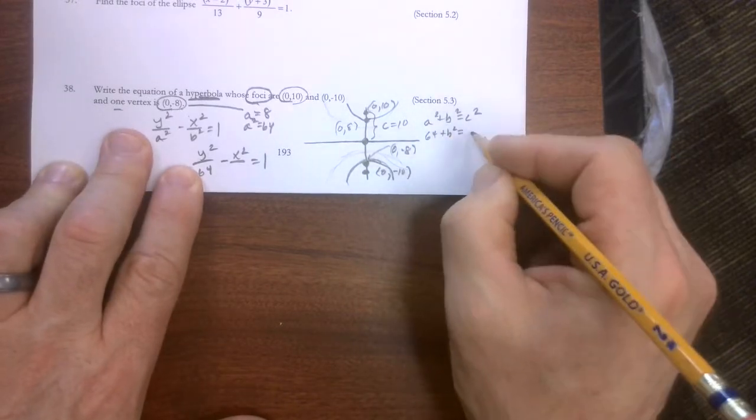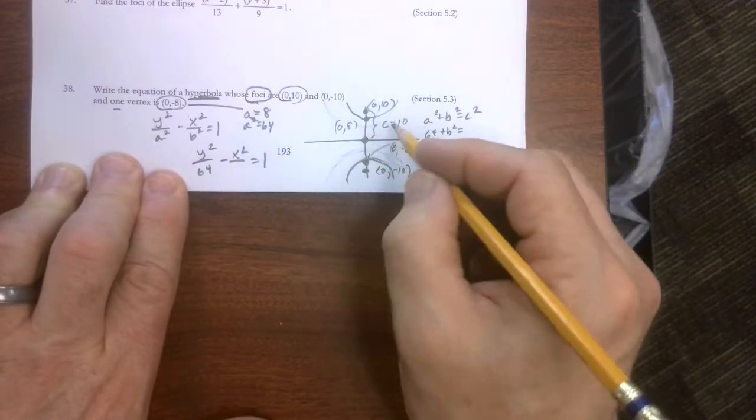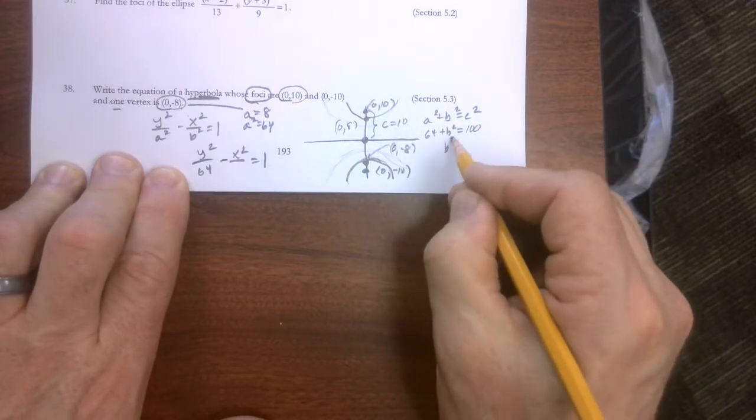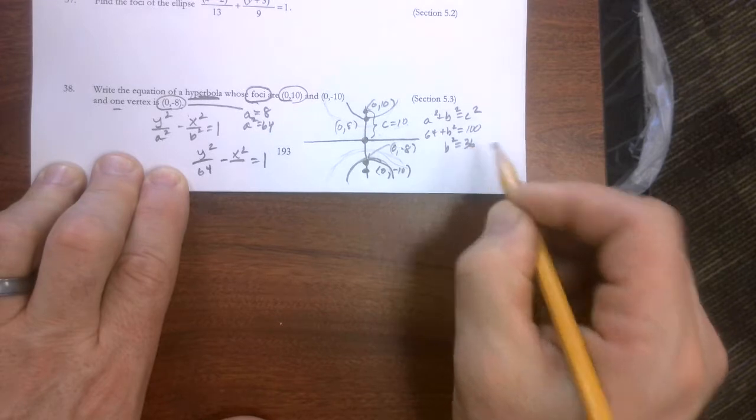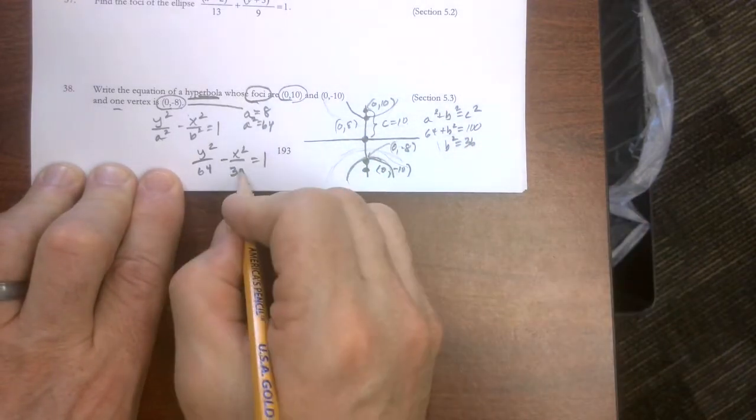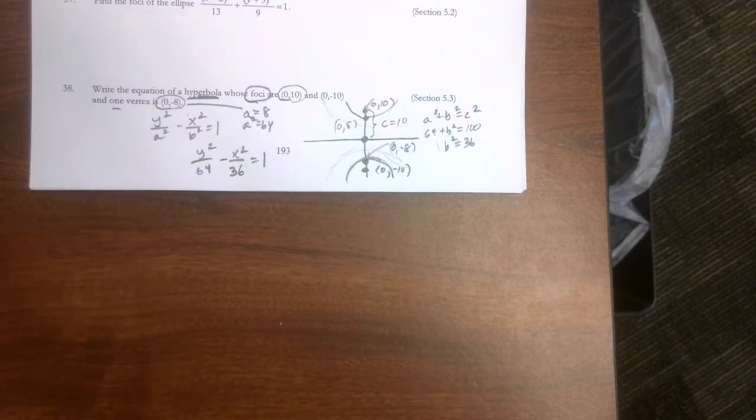We know the formula is a squared plus b squared equals c squared. a squared is 64. b squared, we're trying to find it. c squared, well that would be 100. So we can subtract from both sides and get b squared equals 36. And there's number 38.